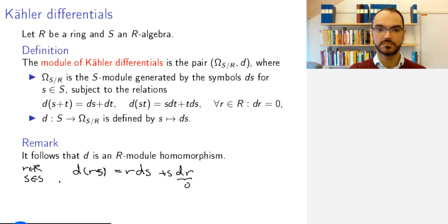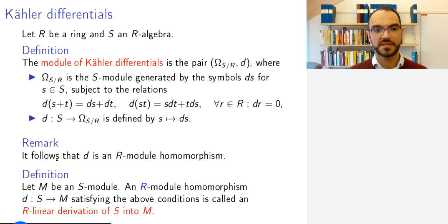Speaking of these things, maps that satisfy these conditions have a name. If M is any S-module, then an R-linear derivation of S into M is an R-module homomorphism from S to M that satisfies these three conditions.